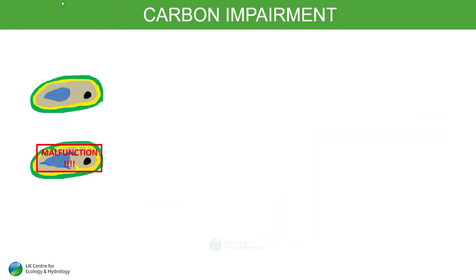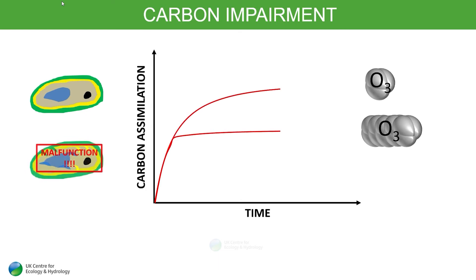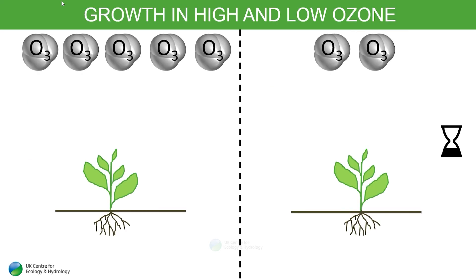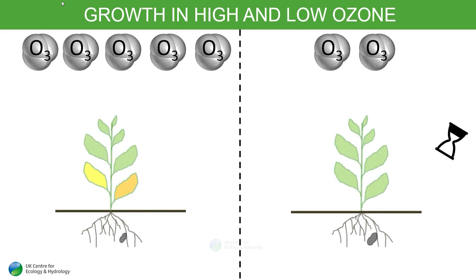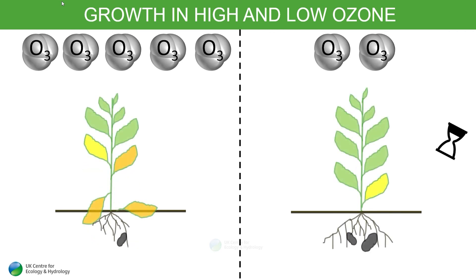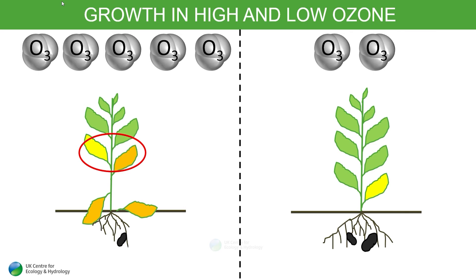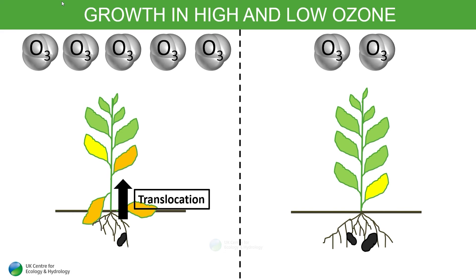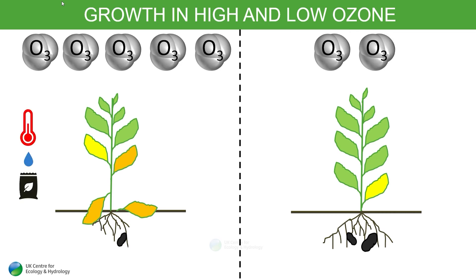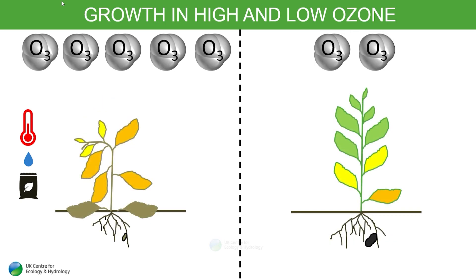Ozone doesn't just cause damage to crop yield through visible injury. Damaged cells can't function as intended — this impairs the uptake of carbon. Ozone also appears to speed up leaf ageing; scientists call this accelerated senescence. Here you can see two plants in a high and a low ozone atmosphere, where the farmer wants to harvest below ground. Although they appear to grow the same at first, differences become apparent — eventually there are fewer leaves on the ozone-affected plant. To compensate for lack of carbon fixation in the leaves, translocation occurs, meaning carbon is moved from the roots, which then impacts yield. Under high heat, drought, or nutrient stress, more limited root systems under ozone may cause the plant to die, leading to failure of the harvest.